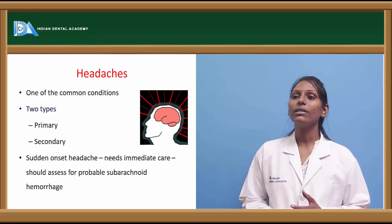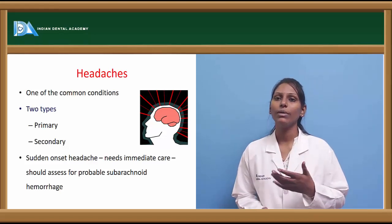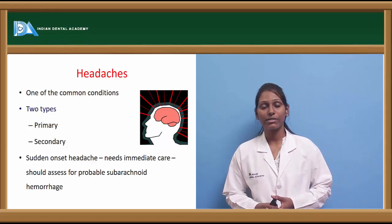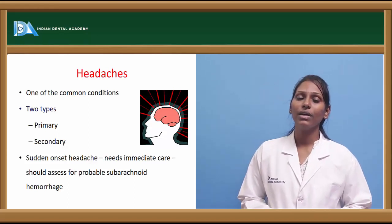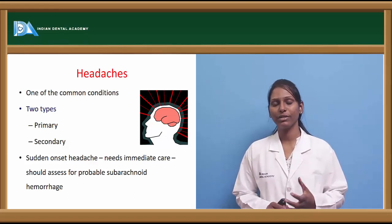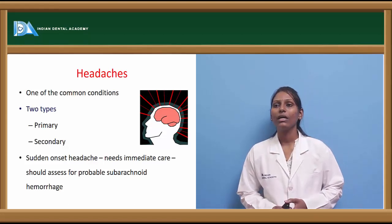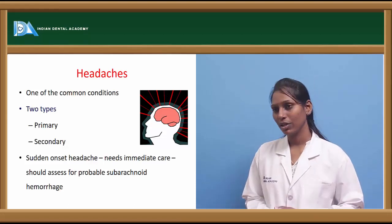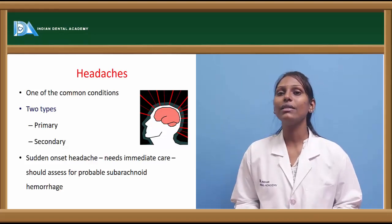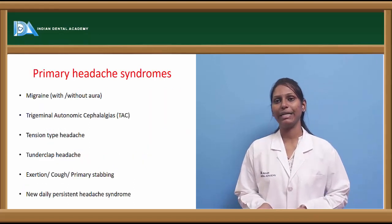Coming to headaches, chronic headaches are usually not very alarming — a simple paracetamol or an NSAID can actually relieve them. But in some cases there are alarming conditions where there is a sudden or abrupt onset headache. This needs immediate care, as it might indicate a probable subarachnoid hemorrhage requiring immediate treatment.